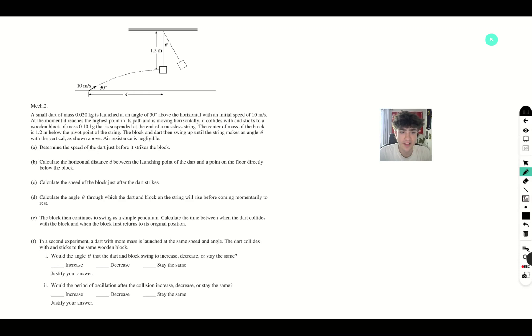A small dart of mass 0.020 kilograms is launched at an angle of 30 degrees above the horizontal with an initial speed of 10 meters per second. The moment it reaches its highest point in the path and is moving horizontally, it collides and sticks to a wooden block of mass 0.1 kilograms that is suspended at the end of a massless string. The center of mass of the block is 1.2 meters below the pivot of the string. The block and dart then swing up until the string makes an angle theta with the vertical as shown above. Air resistance is negligible.